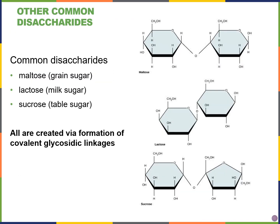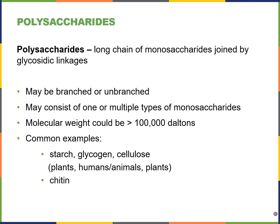There are three very common disaccharides to know. Maltose is made of two glucose monomers linked by a glycosidic bond — it's a grain sugar. Lactose is made of galactose plus glucose and is found in milk. Sucrose — table sugar — is made of glucose and fructose, and is the sugar you typically find in your kitchen.